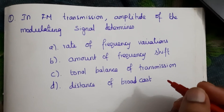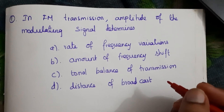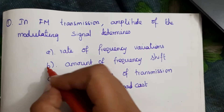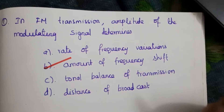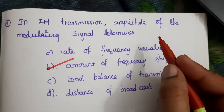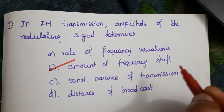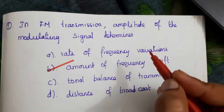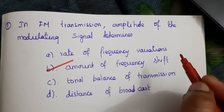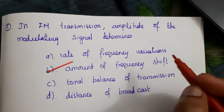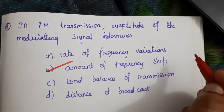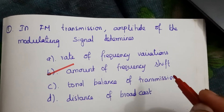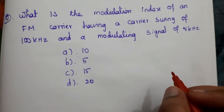First question: In FM transmission, the amplitude of the modulating signal determines the amount of frequency shift. The answer is B, because the amplitude determines the amount of frequency shift — varying the amplitude also varies the frequency shift.